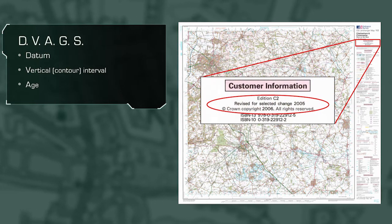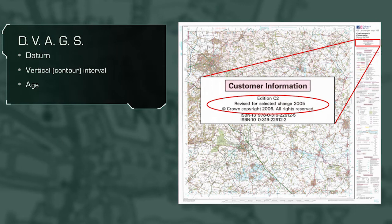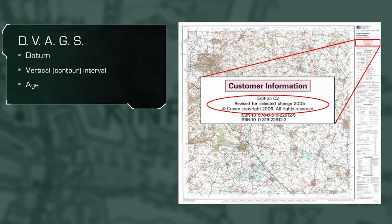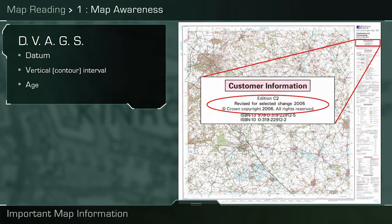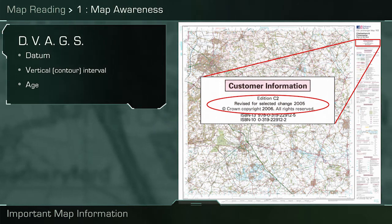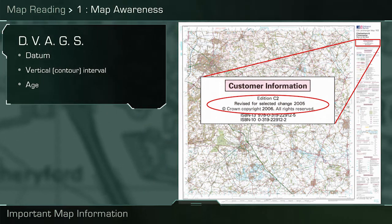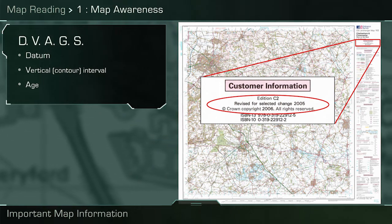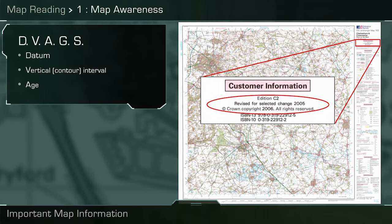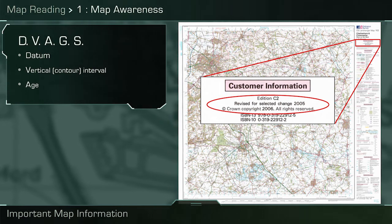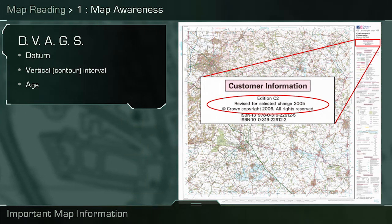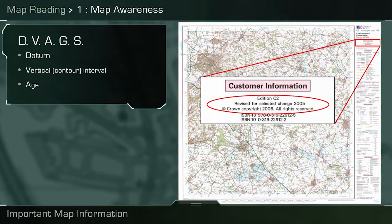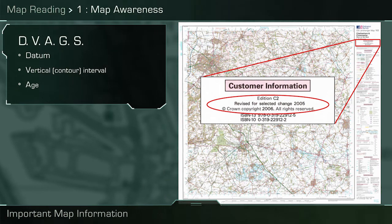A is for age. The user wants to use the most up-to-date and recently published map to avoid new features on the ground not matching with the information presented in the map. The compiled or revised date, circled in red, gives the date of the information contained in the map.